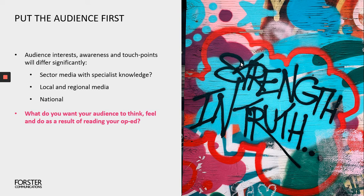Crucially, opinion pieces are not about you — they're about the audience you're trying to reach out to. You need to put the audience first; they need to be front of mind. Think about where their interests lie, what their awareness might be around you or the issue you're going to write about, and where the touch points are. That will differ significantly depending on the audience and the media you're placing the piece in. Is it sector media reaching stakeholders with specialist knowledge? Is it local or regional media reaching a consumer audience who may not know much about it? Or is it national — trying to reach both stakeholders and a broader public audience?